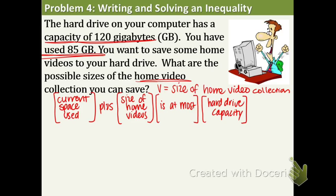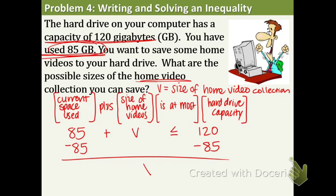Let's fill in our givens: current space used (85) plus size of home videos (v) is at most the hard drive capacity. We use less than or equal to because it cannot go over the capacity. The capacity is 120. So our inequality is 85 plus v is less than or equal to 120. There's only one step: subtract 85 from both sides. V is less than or equal to 35. The conclusion sentence is: the home video collection can be any size less than or equal to 35 gigabytes.